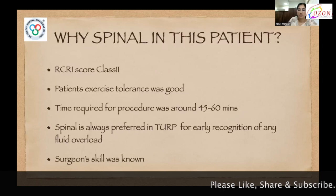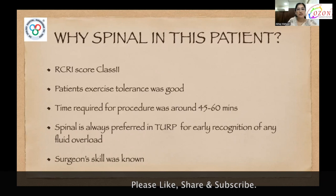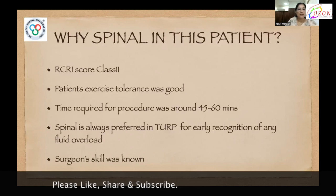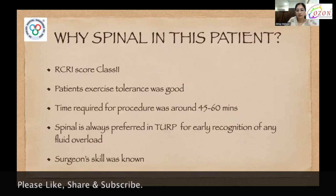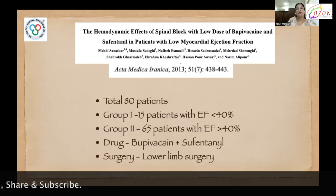Spinal anesthesia was chosen in this patient because the revised cardiac risk index score was class 2, patient's exercise tolerance was good, time required for the procedure was around 45 to 60 minutes, spinal anesthesia is always preferred in TURP patients for early recognition of any fluid overload as in TURP syndrome, and surgeon's skill was known so we were confident about the procedure time.